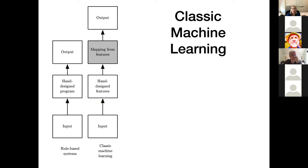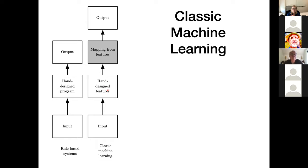In classic machine learning models, the rule-based system on the left is not machine learning — that's the broader AI umbrella where we tell the computer exactly what to do. Classic machine learning learns the model instead. We have what we call hand-designed features: I'm telling it exactly what I'm putting in — weight in kilograms, height in centimeters — and I design and quantitate the features in the format I want to go directly into the model.